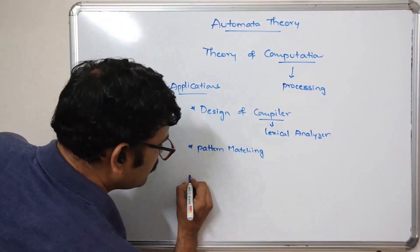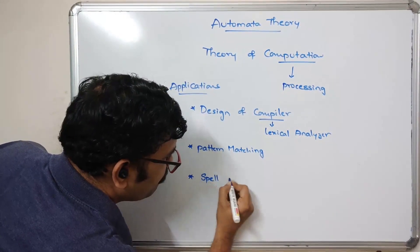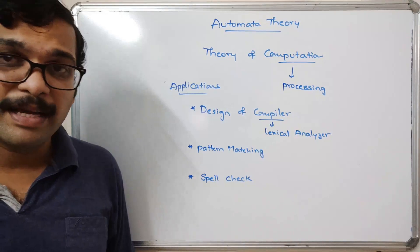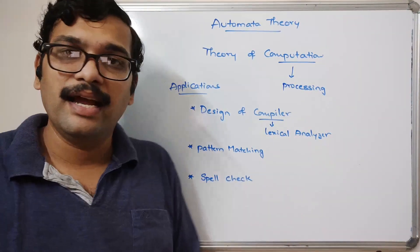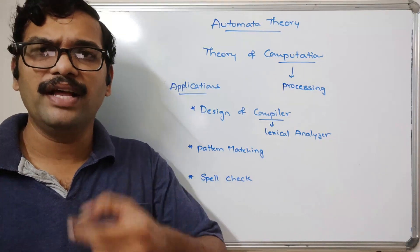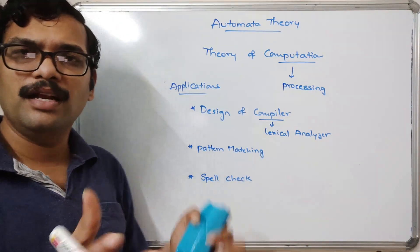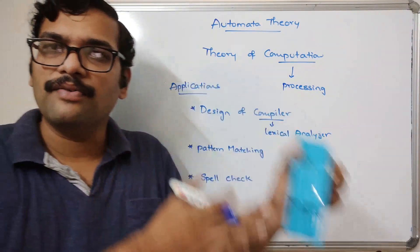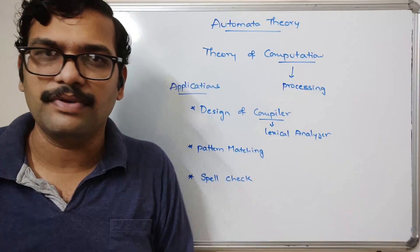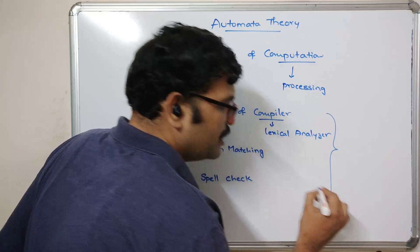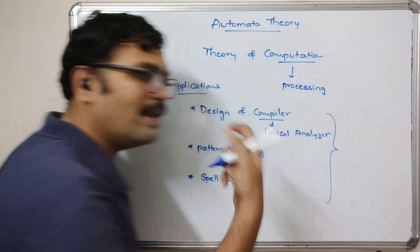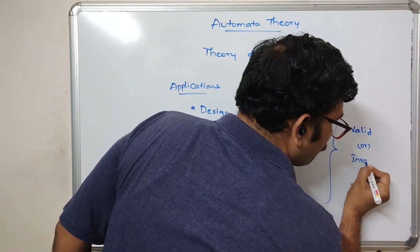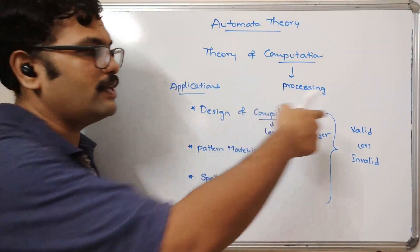The third application is spell check. This option is seen in almost all applications. When you give some words, they are compared with the registered words. If there is any mismatch, automatically it will give an error or highlighting. In all these cases — pattern matching, spell check, and compiler — it checks whether the given input is valid or invalid.